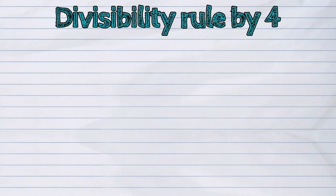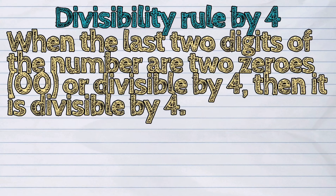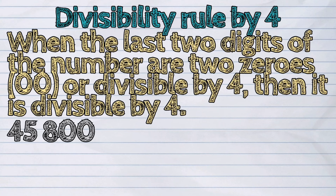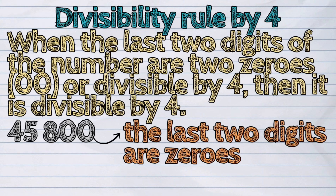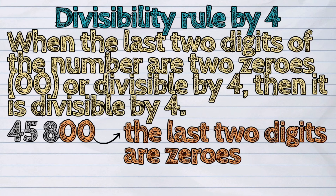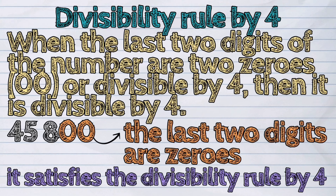Divisibility rule by four: when the last two digits of the number are two zeros or divisible by four, then it is divisible by four. For example, in 45,800, the last two digits are zeros, so this satisfies the divisibility rule by four.